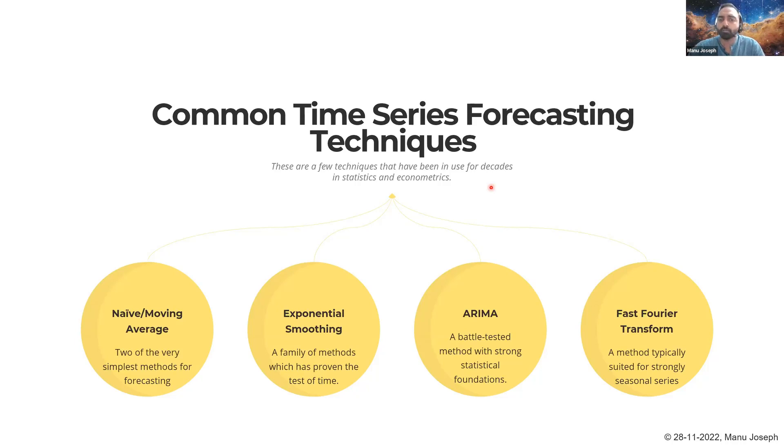We also have lesser-known methods like Fast Fourier Transforms, which is basically saying that there is something called Fourier transform. You take the history, the periodic history, and we convert it into a frequency domain. Then we pick a few top frequencies to reconstruct the time series and we can forecast it that way. So that's another way where periodicity or seasonality is very important.